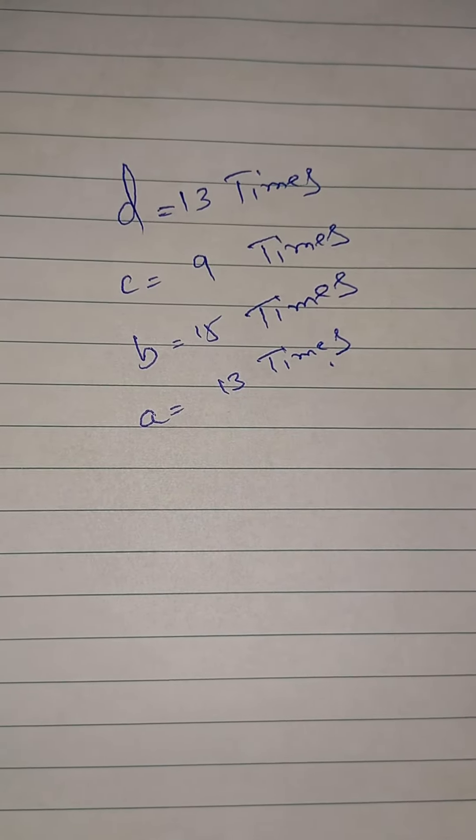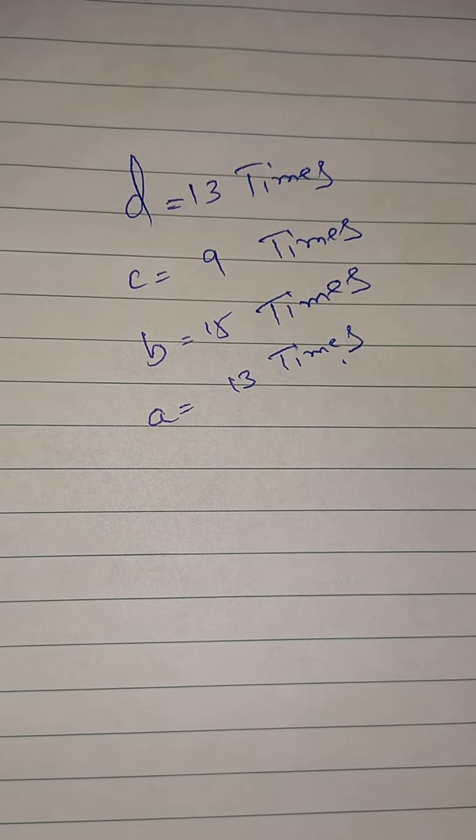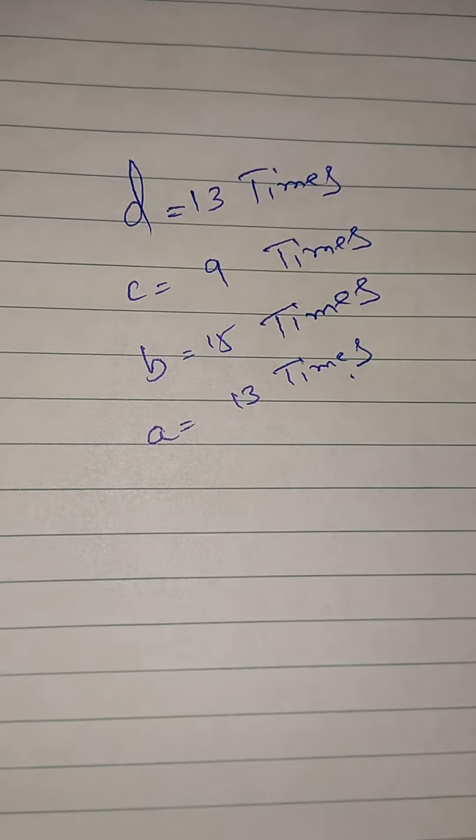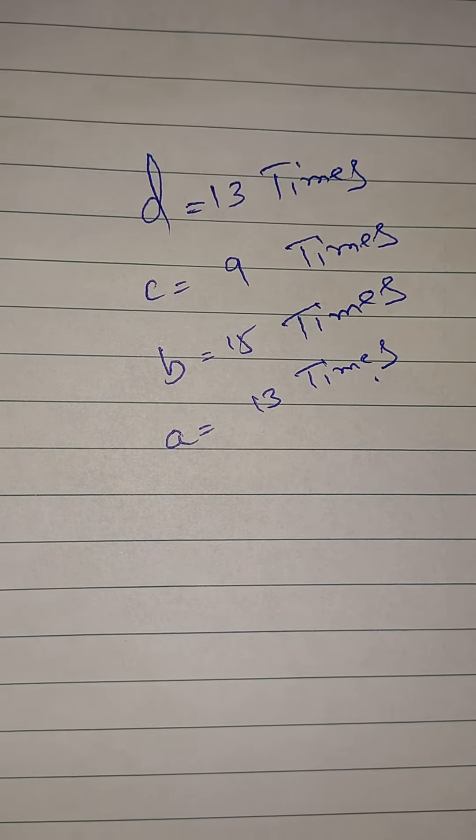As you are able to see here on this page, I am writing here that option D occurs 13 times, option C occurs 9 times, option B occurs 15 times, and option A occurs 13 times.